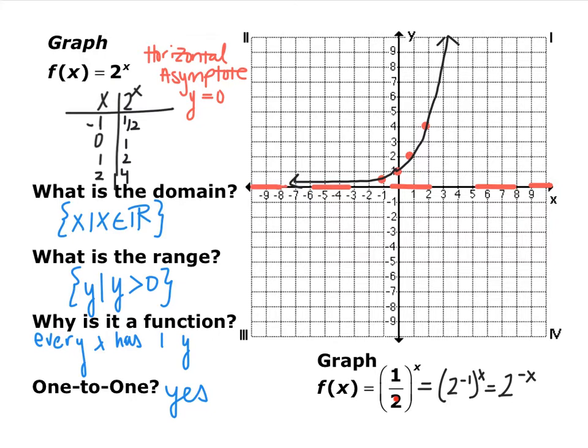So we could rewrite 1 half as 2 to the negative 1, which makes this 2 to the negative x. So we could actually just do a transformation on 2 to the x to graph 1 half to the x. Go ahead and pause the video and graph 2 to the negative x. What would that mean?